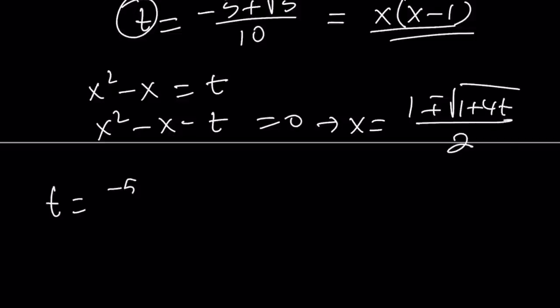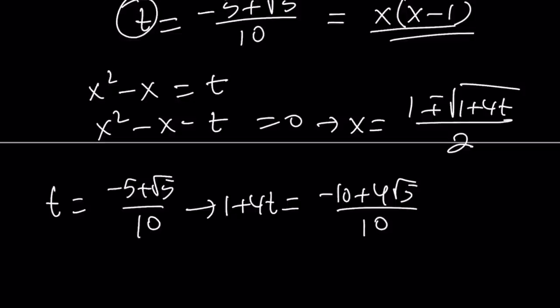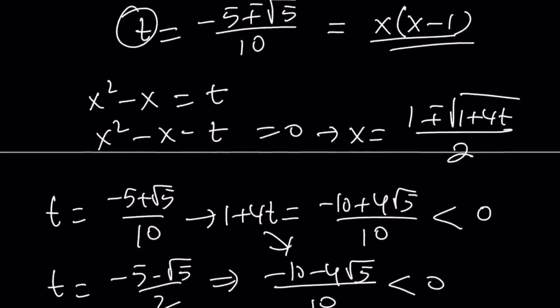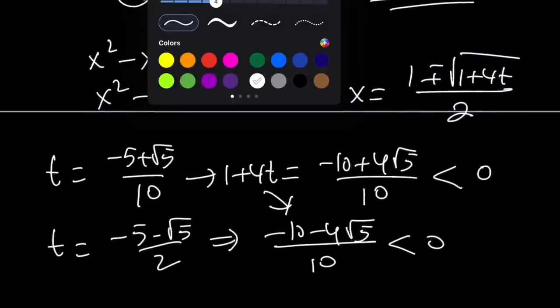And if t is equal to negative 5 plus root 5 over 10, for example, one of the roots, then we're just going to find out the discriminant. Let's evaluate 1 plus 4t. That is going to be negative 10 plus 4 root 5 over 10 if you plug it in. But that's going to be less than 0. For the other t value, you're also going to get a negative value for the discriminant. That's going to be negative 10 minus 4 root 5.